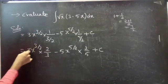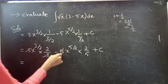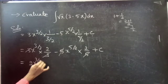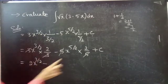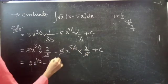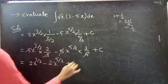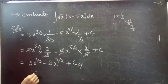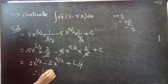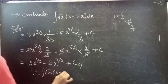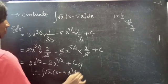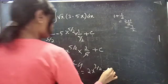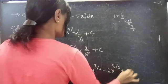So this simplifies to 2 into x to the power 3 by 2, minus 2 into x to the power 5 by 2, plus c. This completes the problem. Therefore, the integral of square root of x into 3 minus 5x dx equals 2 into x to the power 3 by 2, minus 2 into x to the power 5 by 2, plus c.